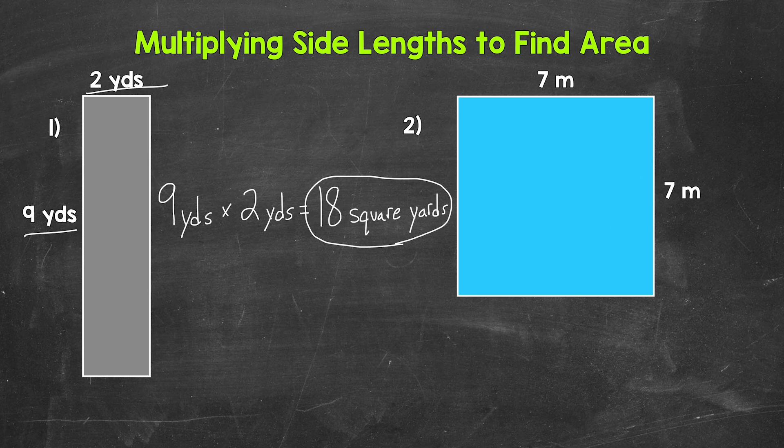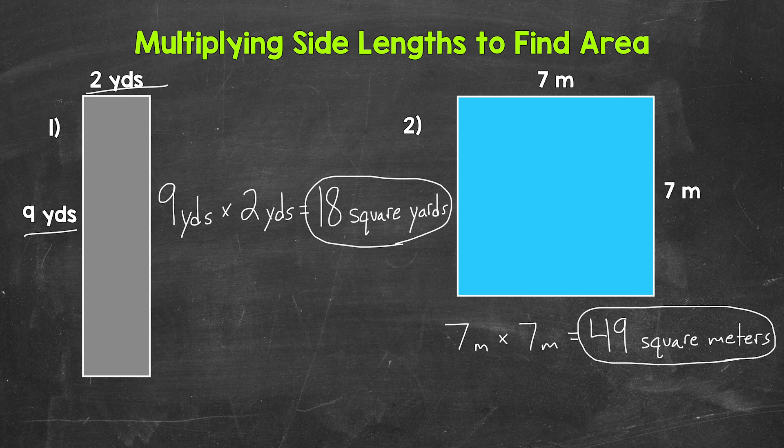Let's move on to number two, where we actually have a square. But we can do the exact same thing for squares and it will work. We need to multiply side lengths. So we have seven meters and seven meters here. So we can do seven meters times seven meters in order to find the area. Well, seven times seven gives us 49. And this is square meters. And that's the area of that square.